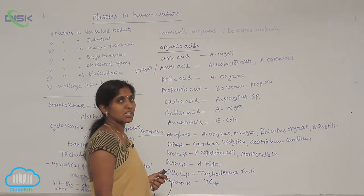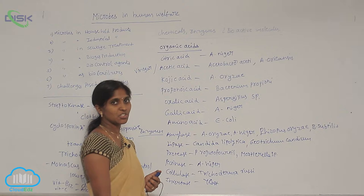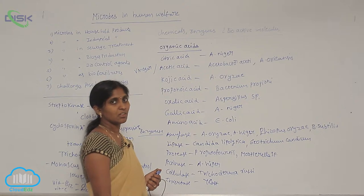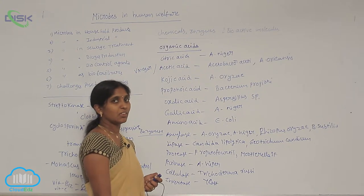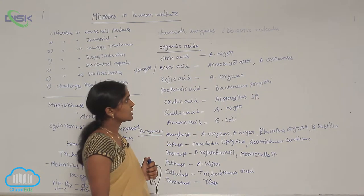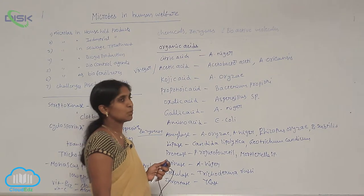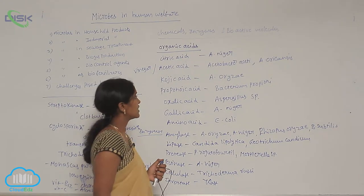Kojic acid is a whitening agent, extracted from Aspergillus oryzae cultures.